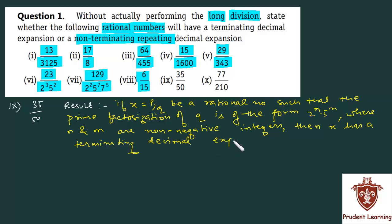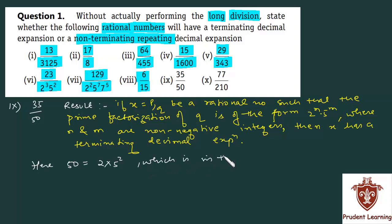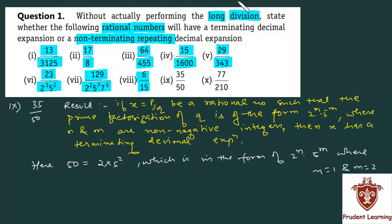Else it has a non-terminating repeating decimal expansion. Here q is 50, and 50 can be written as 2 into 5 whole square, which is in the form of 2 to the power of n into 5 to the power of m, where n is equal to 1 and m is equal to 2. Hence 35 upon 50 has a terminating decimal expansion.